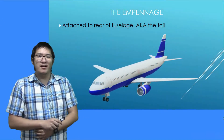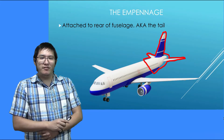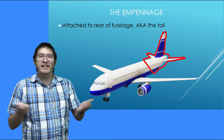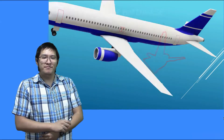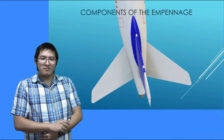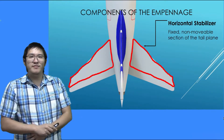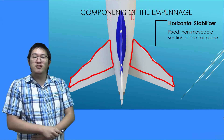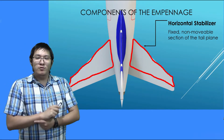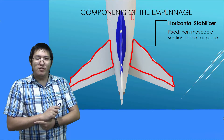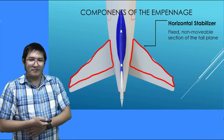Moving on. Now the empennage. It is attached to the rear of the fuselage, also known as the tail — it's literally just a fancy word for tail. Components of the empennage: first off, we have the horizontal stabilizer. They are fixed, non-movable sections of the tail plane, sitting horizontally.